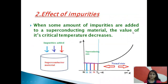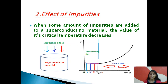Now let's see how impurities affect the superconducting properties. When some amount of impurities are added to a superconducting material, the value of its critical temperature decreases. For example, consider a superconducting material at a critical temperature of 4 Kelvin. When we add some amount of impurities, the material loses its superconducting property. But when we decrease the temperature below the critical temperature, the material again behaves like a superconductor.